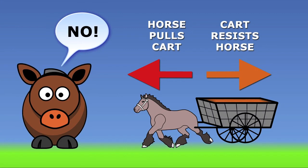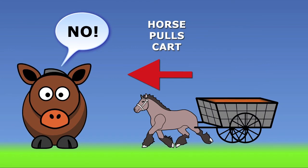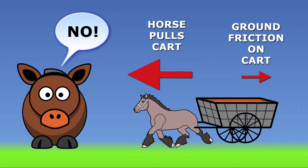Well, this is a smart horse, but maybe too smart. He's right about Newton's Law, but he's mixing up his action and reaction pairs. If you want to know if the cart will move forward, we should only consider the forces on the cart. The horse is pulling forward on the cart and there's maybe a little bit of force from friction backward from the ground. So if this horse pulls on the cart, it will move forward. So Mr. Horse, you better get to work.